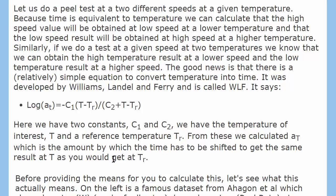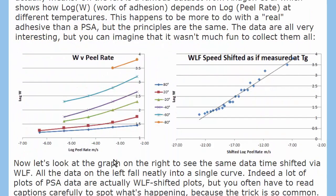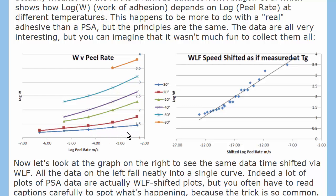This will start to make sense in a moment. Here's some famous experimental data. This is the peel of some rubbery material — this axis is the log of the work of adhesion, and this is the log of the peel rate. At low temperatures, minus 80°C, you have a large work of adhesion because it's a very stiff material, and the work of adhesion depends very strongly on the peel rate. At high temperatures, plus 80°C, you have a very low work of adhesion and it doesn't depend all that much on the peel rate, because it's a big soft system.